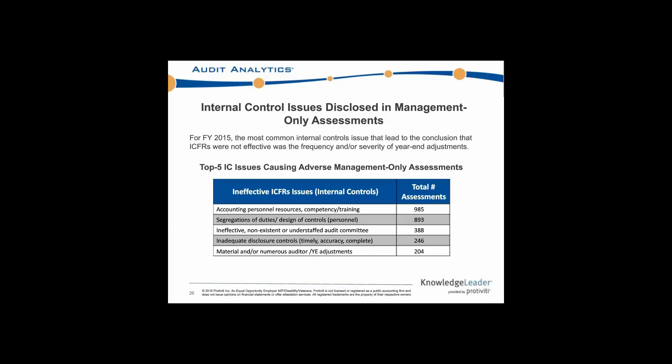Even the next issue down is ineffective, non-existent, or understaffed audit committee, followed by inadequate disclosure controls, and then at the bottom of this top five list, material and/or numerous year-end adjustments — which was number one in terms of the auditor attestation for ineffective ICFRs.